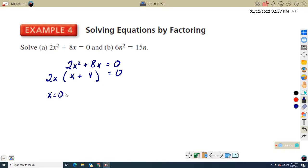X equals zero, or X plus 4 equals zero. So solving this one for X, X equals negative 4. So X is zero, X is negative 4. For example B, this was example A. For example B.